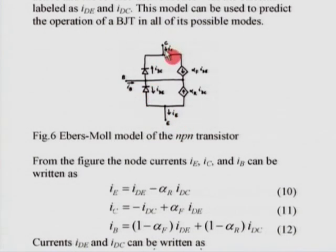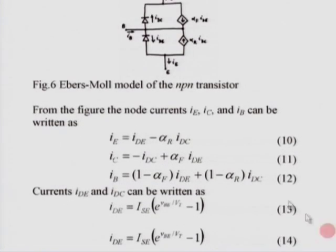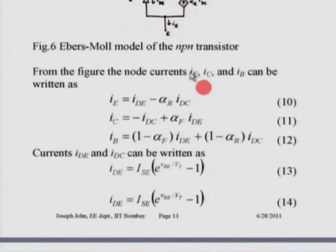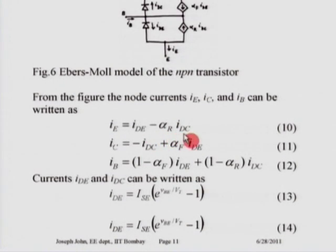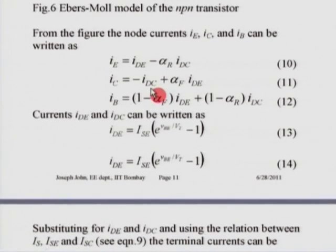The advantage of the Ebers-Moll model is that we can predict the currents. We write I_E = I_DE − α_r × I_DC, I_C = −I_DC + α_f × I_DE, and I_B = (1 − α_f) × I_DE + (1 − α_r) × I_DC, where I_DE = I_SE × (e^(V_BE / V_T) − 1) and I_DC = I_SC × (e^(V_BC / V_T) − 1). Substituting these values gives detailed expressions for all three currents.